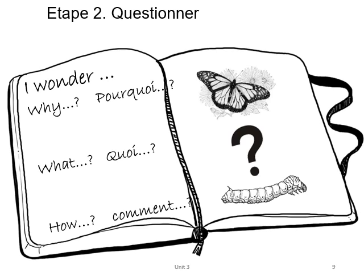Here are some ideas to guide your questioning. Ask why, what, and how. If you see a butterfly, ask: where did that butterfly come from? Where is it going? What is it doing? How is it doing it? If you see a plant you don't recognize, ask: why is it there? What is the plant? How does it survive?